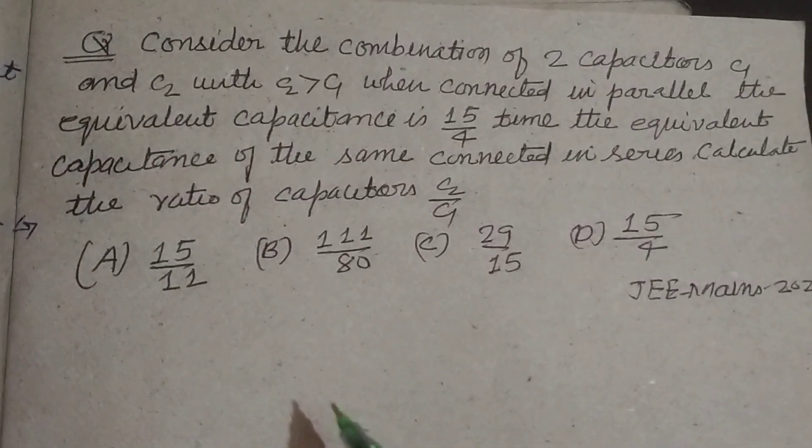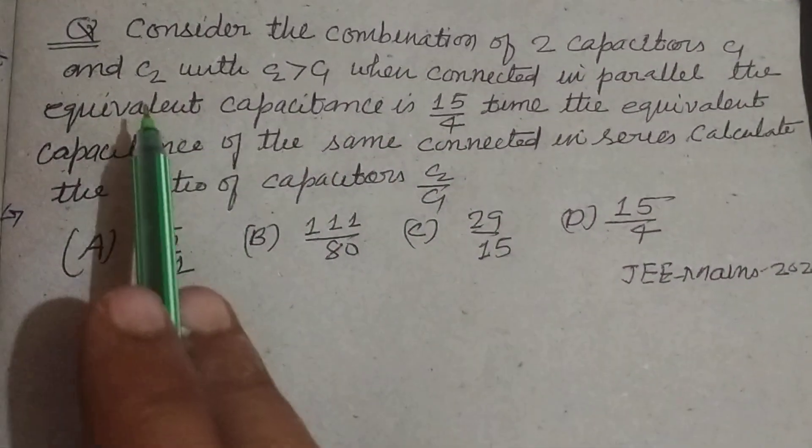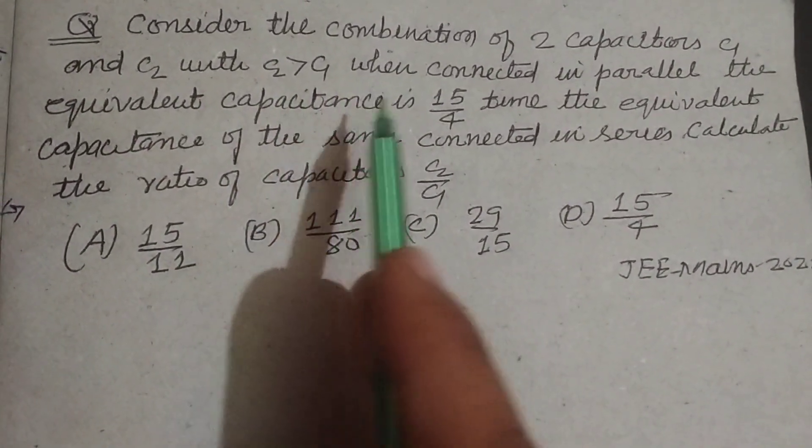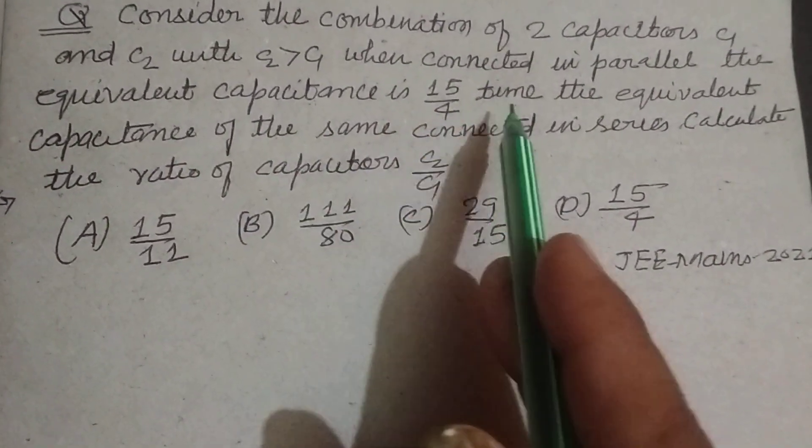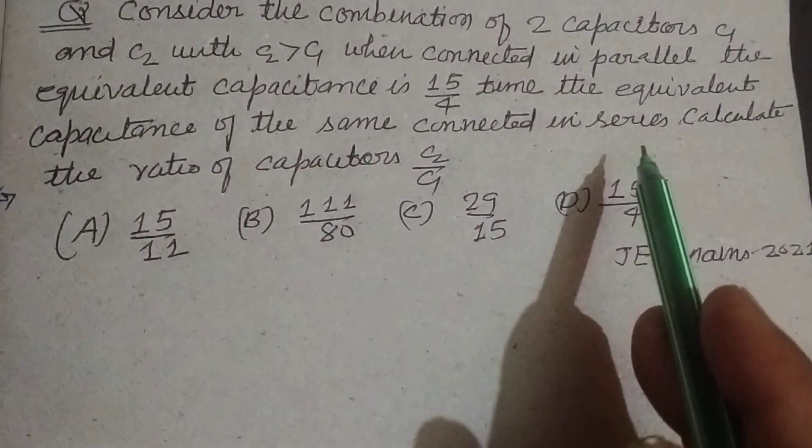Hello students and welcome to this YouTube channel. Consider the combination of two capacitors C1 and C2 with C2 greater than C1. When connected in parallel, the equivalent capacitance is 15 upon 4 times the equivalent capacitance of the same connected in series.